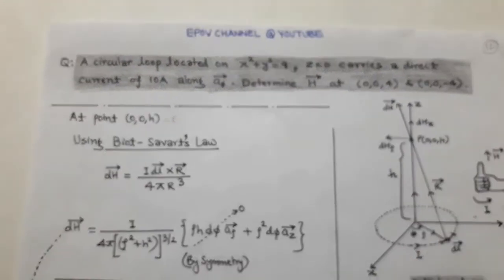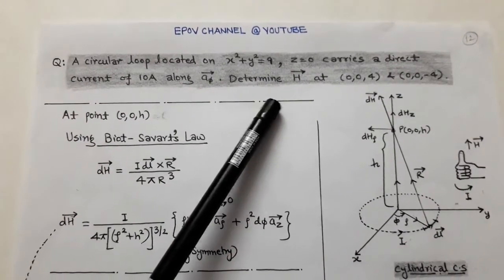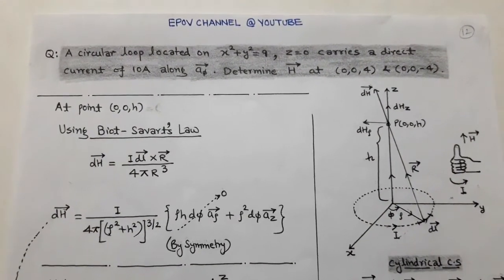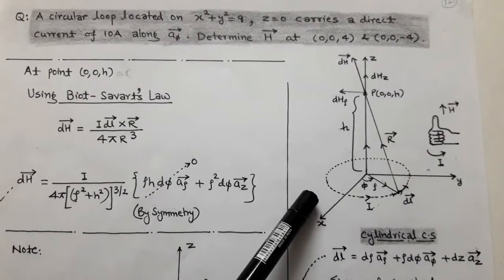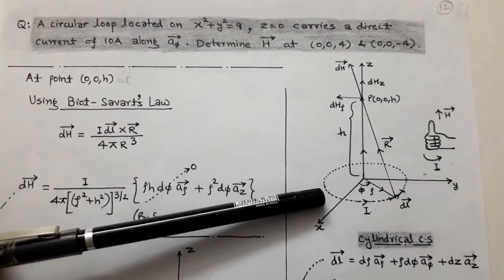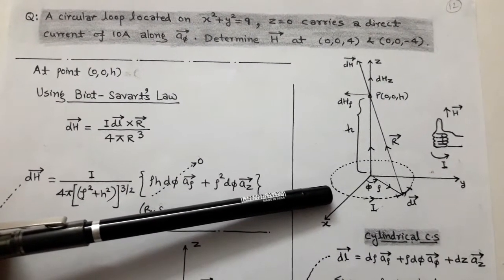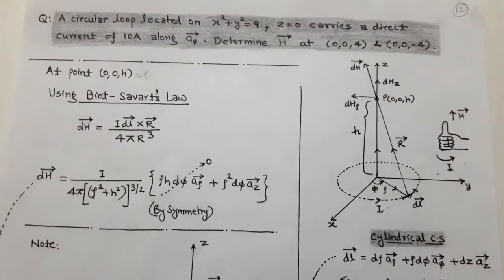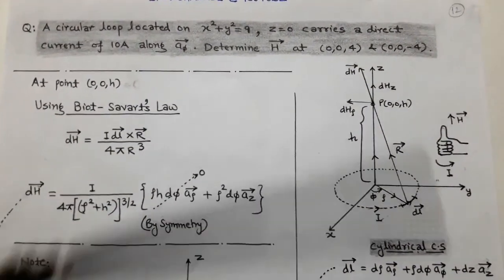The question is: a circular loop located on x² + y² = 9, z = 0, carries a direct current of 10 ampere along unit vector φ. Determine H vector at (0, 0, 4) and (0, 0, -4). From the given question, there is a circular loop located on x² + y² = 9, z = 0, meaning the loop is on the z = 0 plane, carrying a direct current of 10 ampere along unit vector φ.